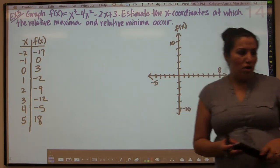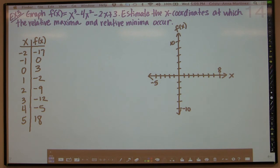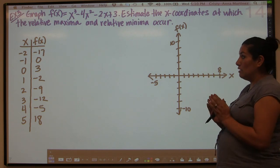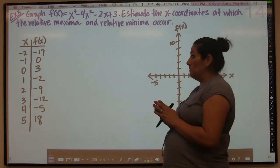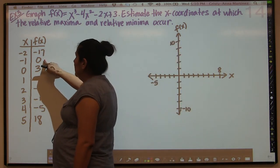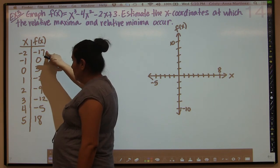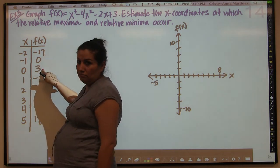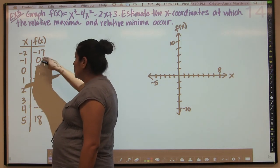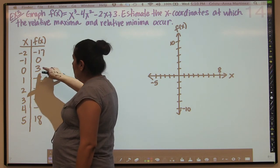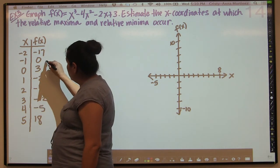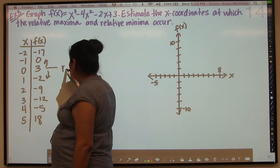How can we tell from a T-table whether or not we have a max or a min? For a max, you're bigger than all the points around you; for a minimum, you're smaller than all the points around you. For example, 0 is going to be larger than negative 17, but 0 is not larger than 3 — so this is not a max. But then you can see that 3 is bigger than 0 and 3 is bigger than negative 2 — it's bigger in both directions. So this is probably going to be a relative max.